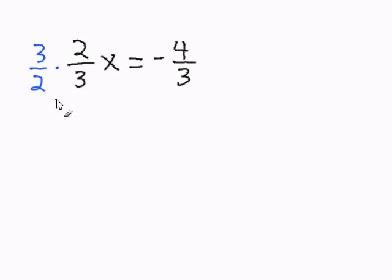Now, if we multiply 3 over 2 on one side of the equal sign, we must do the same thing on the other side. So we multiply negative 4 over 3 by 3 over 2 as well.